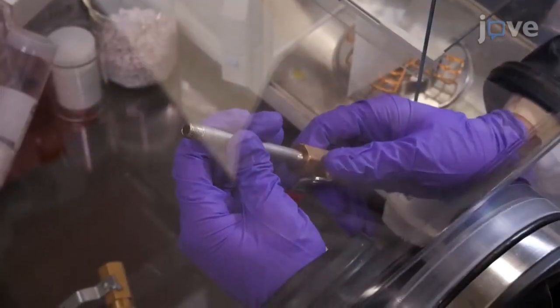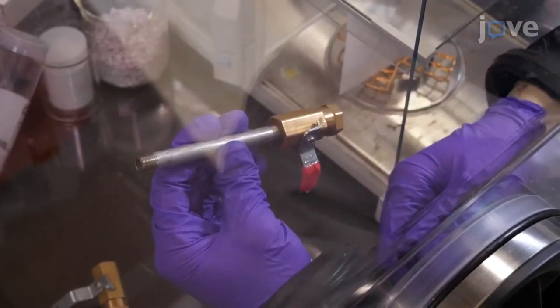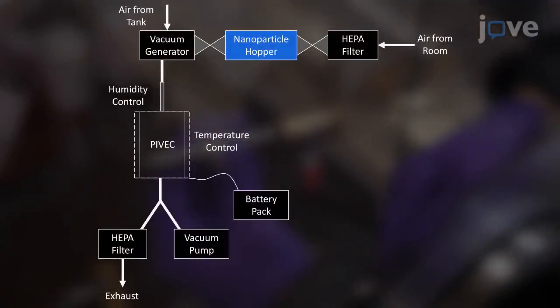To assemble the dry dispersal system, connect a ball valve to one end of the 4-inch long, 1/8th size threaded pipe. This serves as the particle hopper.